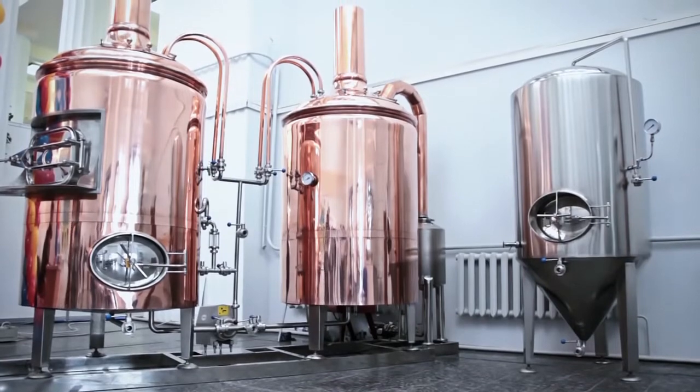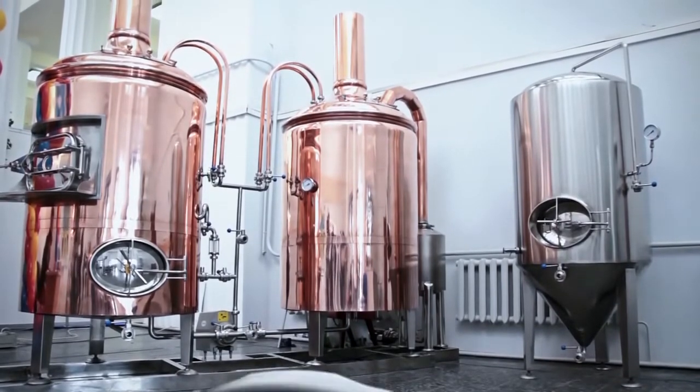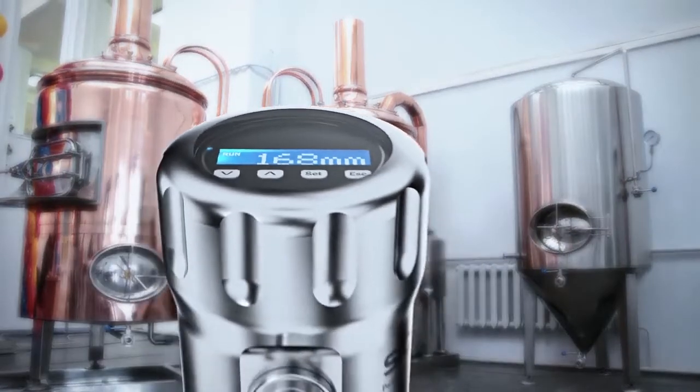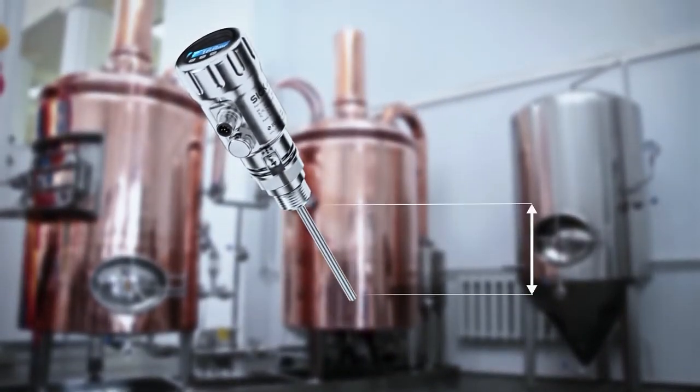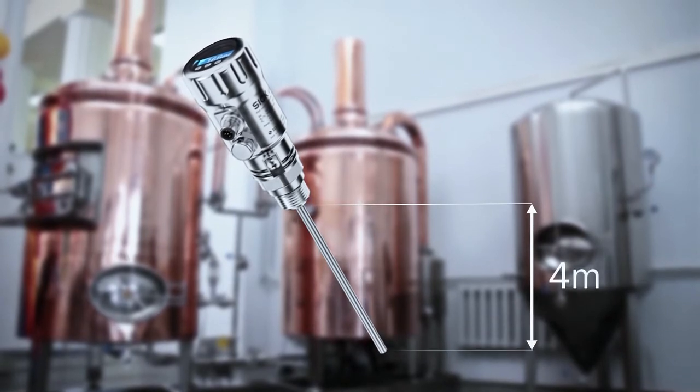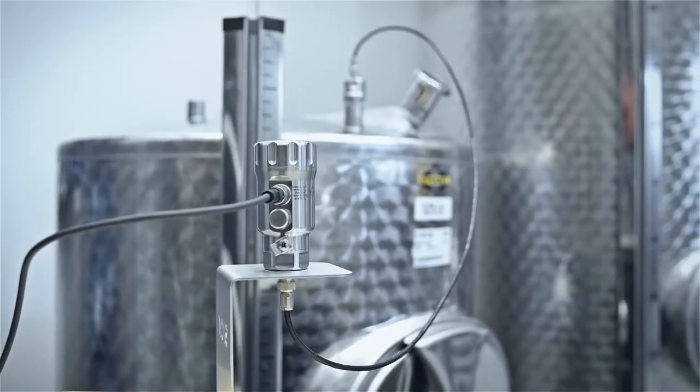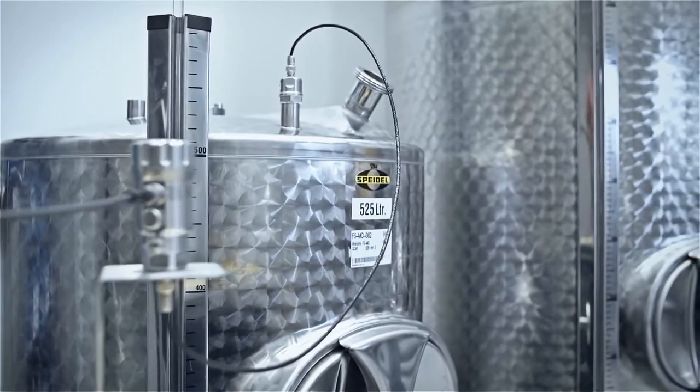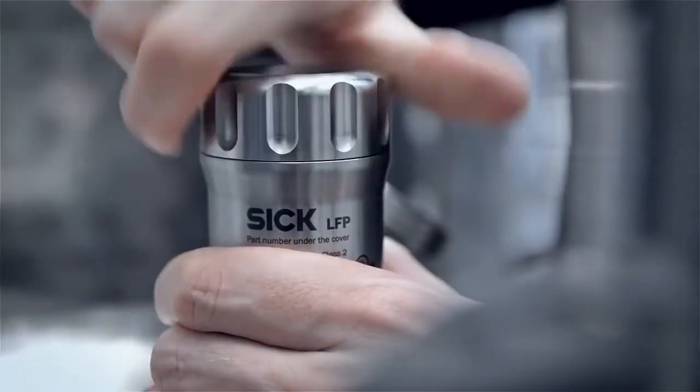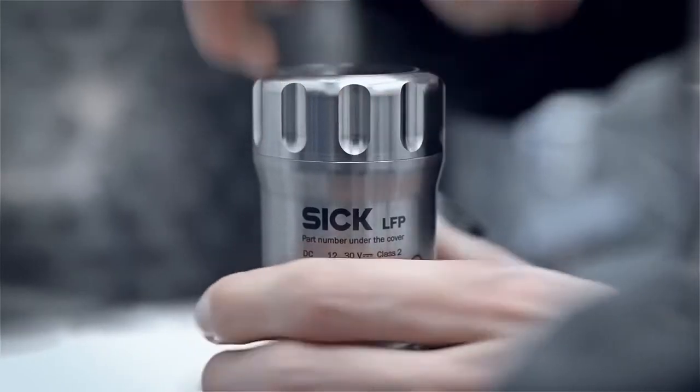Tanks and containers come in all different sizes with a variety of liquid levels that have to be measured. The LFP INOX features rod probes up to 4 meters long, which can be cut to length manually, various types of probe and replaceable connections, as well as making the sensor flexible in application. This also saves time and money.